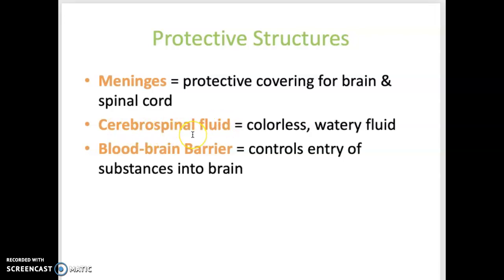Cerebrospinal fluid, also called CSF, is a watery fluid located in the spaces within the brain and spinal cord, also known as ventricles. It also surrounds the brain and spinal cord. The blood-brain barrier is a protective mechanism that blocks specific substances from entering brain tissue from the bloodstream.